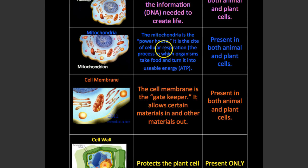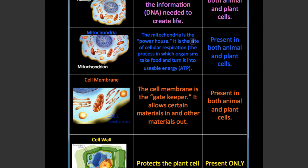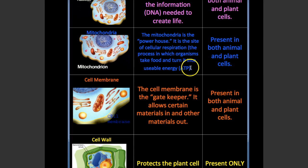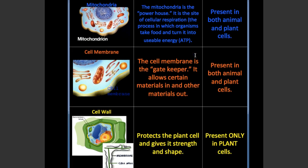The mitochondria, or the powerhouse, is the site of cellular respiration. Cellular respiration is the process by which organisms take food and turn it into usable energy — ATP. This is what the mitochondria looks like, and it is present in both animal and plant cells.